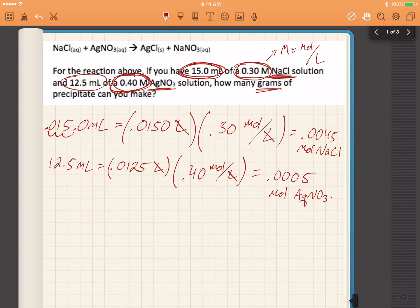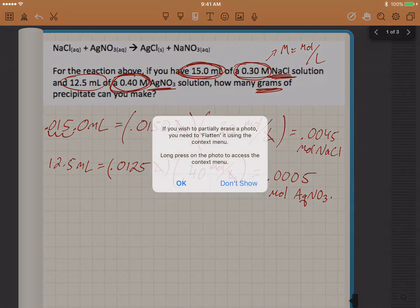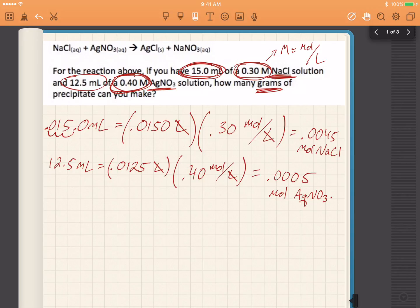0.0125 times 0.40 is 0.0005 moles of silver nitrate. I want to know how many grams of precipitate I can make. Well, the precipitate is that guy right there. And I need to know how many grams of it I can make. I need to know how many moles I can make first of all. And before I see how many moles I can make, I need to figure out which one is the limiting reactant.